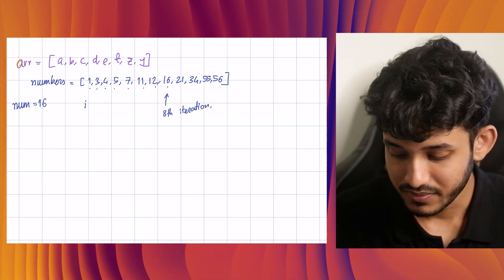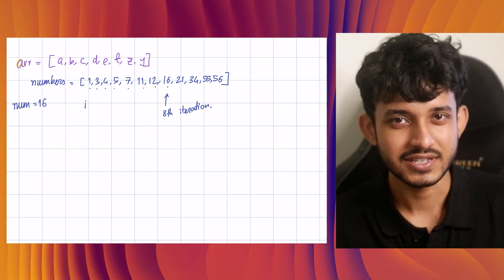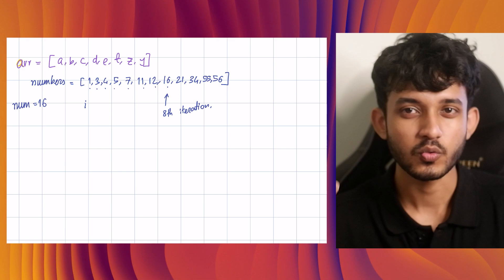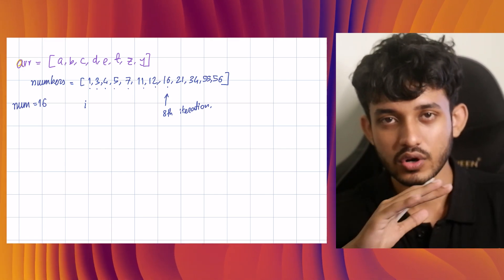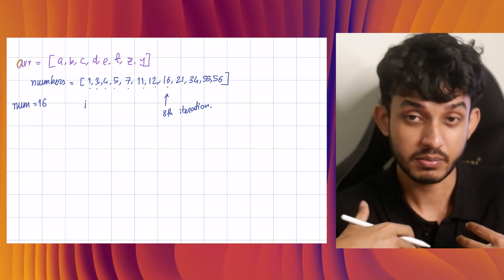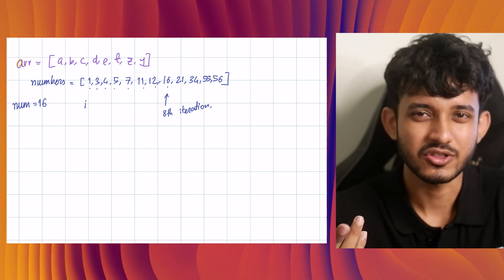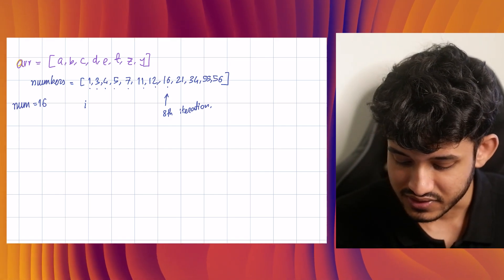Take care. Now the problem is that 16 could be towards the end of the list, towards the beginning of the list, but we always calculate the worst scenario because we have to be prepared. Our code has to prepare for the worst scenario. If you are prepared for the worst scenario, any other scenario is good to go. It's just a cherry on the top, honestly.